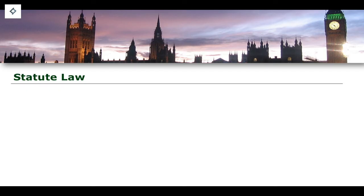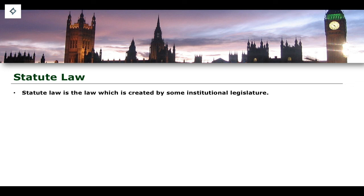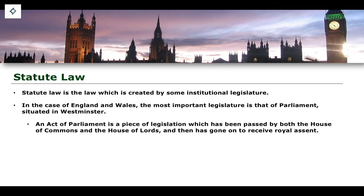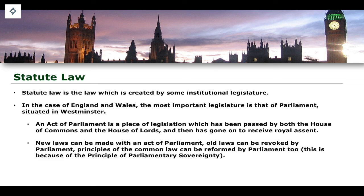The Sexual Offences Act 2003 represents what is known as statute law — it is law which is created by some kind of institutional legislature. In the case of England and Wales, the most important and supreme institutional legislature is that of Parliament, situated in Westminster. Essentially, an Act of Parliament is a piece of legislation which has been passed by both the House of Commons and the House of Lords and has then gone on to receive Royal Assent. New laws can be made by an Act of Parliament; in addition, old laws can be revoked by an Act of Parliament, and principles of the common law can even be reformed and changed as a result of an Act of Parliament.